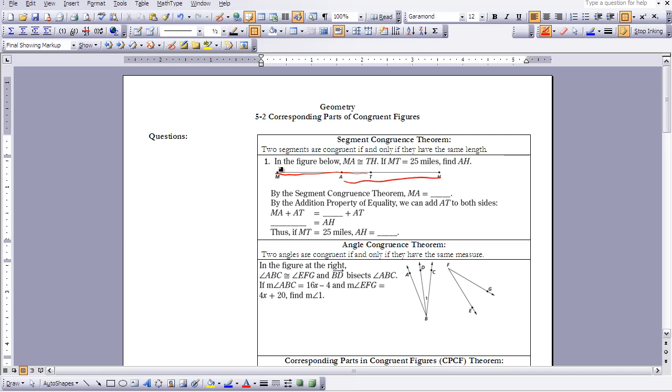By the segment congruence theorem, we know that MA is going to equal TH. By the addition property of equality, we can add AT to both sides. So MA plus AT is going to be equal to TH plus AT.